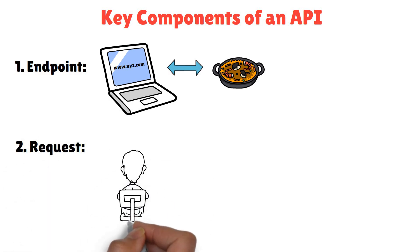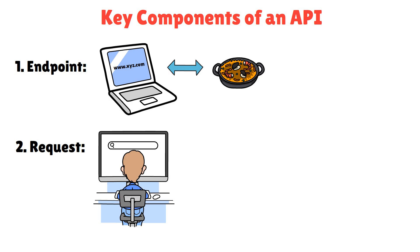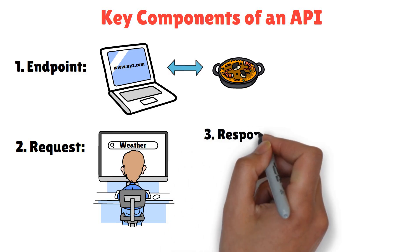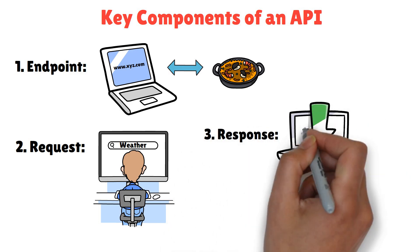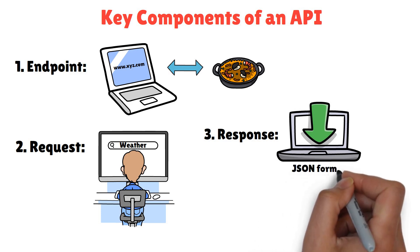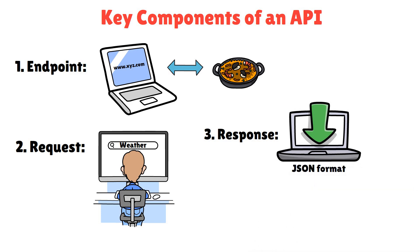Request. The action you want to perform, like asking for today's weather. Response. The data the API sends back to your app, often in a format like JSON, a readable data format.